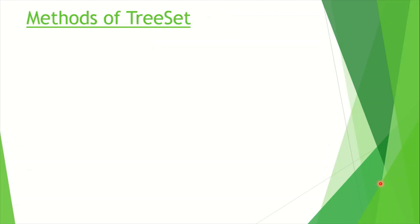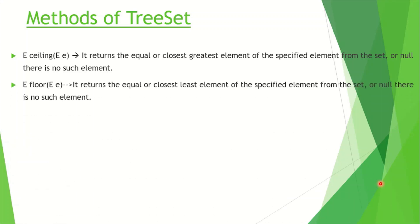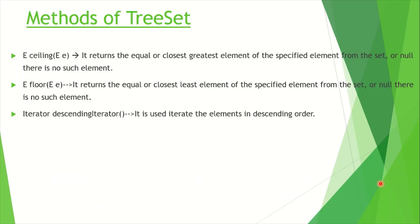Let's see a few methods of TreeSet that are not common in other collection framework implementations. The first is ceiling — it returns the equal or closest greatest element of the specified element from the set, or null if there is no such element. The next is floor — it returns the equal or closest least element of the specified element in the set. The next is descending iterator — this returns a descending iterator used to iterate elements in descending order. A normal iterator iterates in ascending order, but if we explicitly want descending order we use this method.